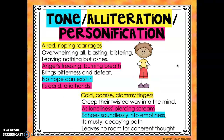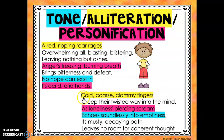Now I'm going to show you more examples of these elements in actual poems. We're only focusing on alliteration, highlighted in yellow. The first example says: 'A red ripping roar rages' — there are four R words repeating that beginning sound. Further down, another yellow-highlighted example reads: 'Cold coarse clammy fingers,' where all the describing words start with the letter C. That's alliteration.